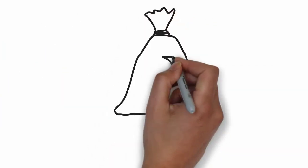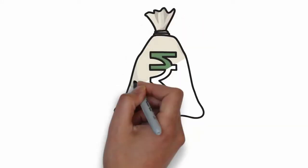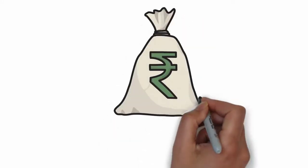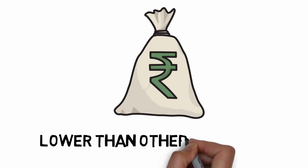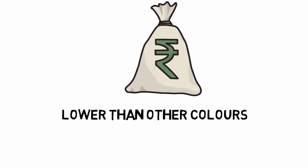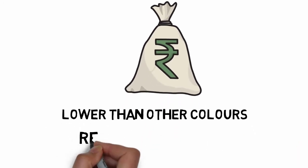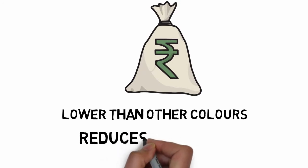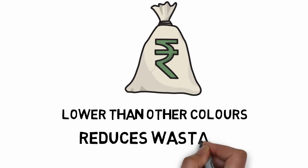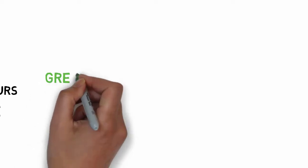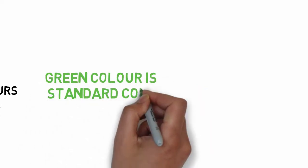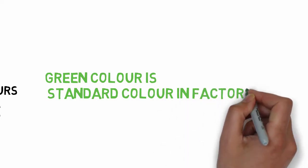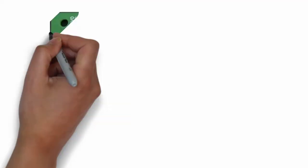If we look at the solder mask dam dimensions, the green color has the smallest gap — this is the main reason green color is preferred. On the manufacturing side, the green solder mask remains the standard color as it allows slightly tighter tolerances.